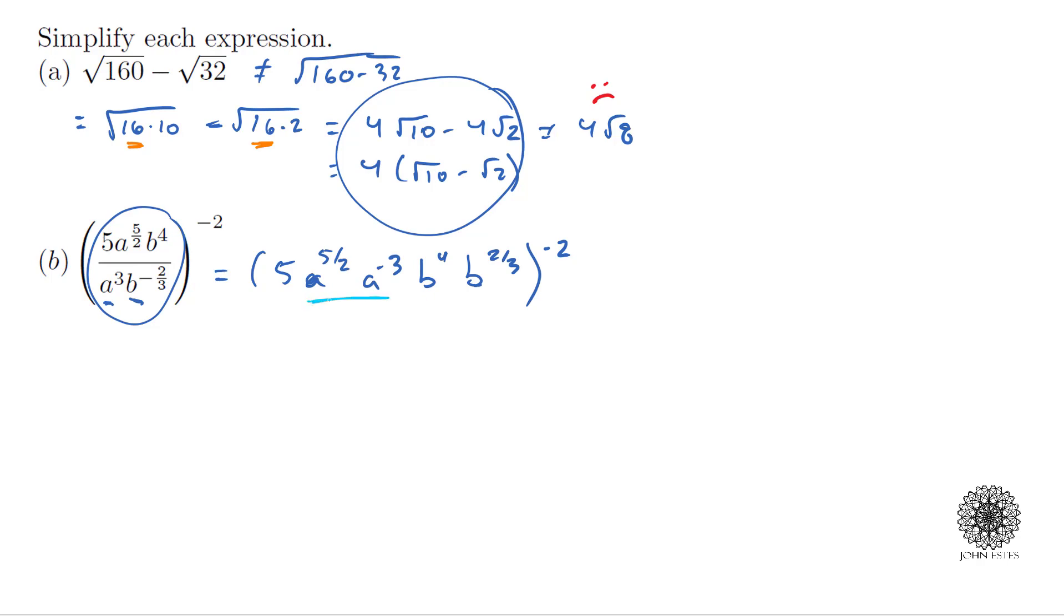Now remember I can bring together these expressions by adding their exponents. So here I have 5a to the 5 halves and a to the negative 3. That's going to be 5 halves plus negative 3, that's 5 halves plus negative 6 halves. We're going to get a common denominator, so I get a to the negative one-half there.